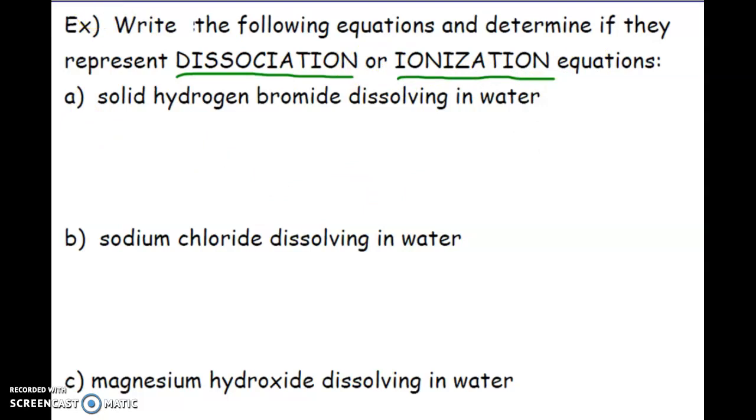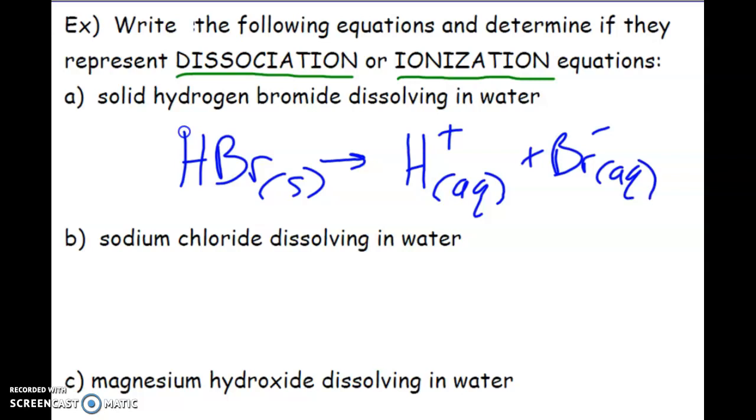Let's take a look. Here we have hydrogen bromide in its solid form. We're dissolving this in water. That means that we are going to now have hydrogen ions and bromine ions. Because this compound did not start off as being an ionic compound, this is going to be ionization. So we're just going to put an I for ionization. And of course we know that once that hydrogen bromide is dissolved, it's now hydrobromic acid.